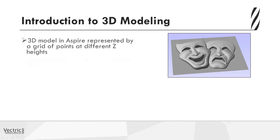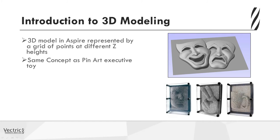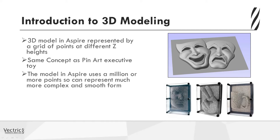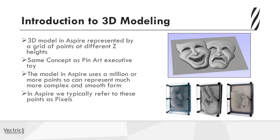The concept is exactly the same as the executive pin art toy, where you have the pins that you can push a 3D shape into them and see that represented by the different heights of the pins being pushed up. The difference with Aspire is that we are using a million or more points so we can represent much more complex and smooth forms. In the software, we refer to these points as pixels.